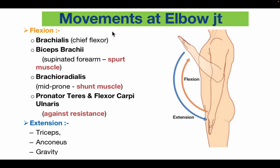Movements at the elbow joint: flexion is performed primarily by the brachialis muscle. The biceps brachii assists in supination of the forearm as well as flexion of the elbow. The brachioradialis acts in the mid-prone position. The pronator teres assists in pronation of the forearm and also contributes to flexion. The flexor carpi ulnaris also assists in flexion. Extension is performed by the triceps and anconeus muscles.